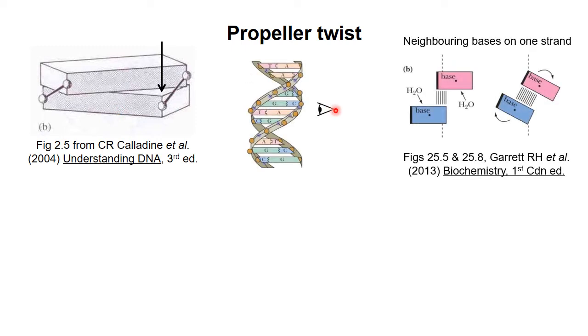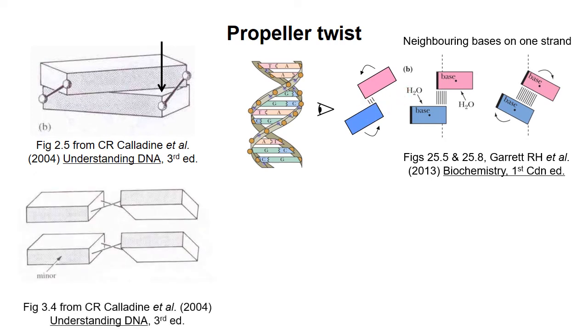So imagine looking at a double helix from the side through the sugar phosphate backbone in a direction parallel to the hydrogen bonds between the bases. The pink and blue rectangles represent what you would see, the edges of two neighboring bases on the same strand. Their base pairing partners are not shown, but are behind these rectangles. In the diagram, the bases overlap in one area, but in other areas the surfaces are exposed to water. The exposed area can be reduced if the bases both rotate clockwise around the axis that goes through the base pair. If the bases rotated counterclockwise, it would make the situation worse.